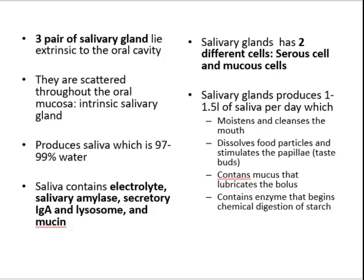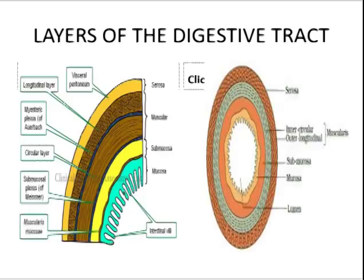The parotid gland is located anterior to the ear, between the masseter muscle and skin. The submandibular gland lies along the medial aspect of the body of the mandible. The sublingual gland lies anterior to the submandibular gland and under the tongue. Saliva is made up of 97 to 99 percent water. It contains electrolytes, salivary amylase for starch digestion, secretory immunoglobulin A and lysozyme for immune defense, and mucin — a protein that when dissolved in water forms mucus. Different cells within the salivary glands produce different kinds of saliva.